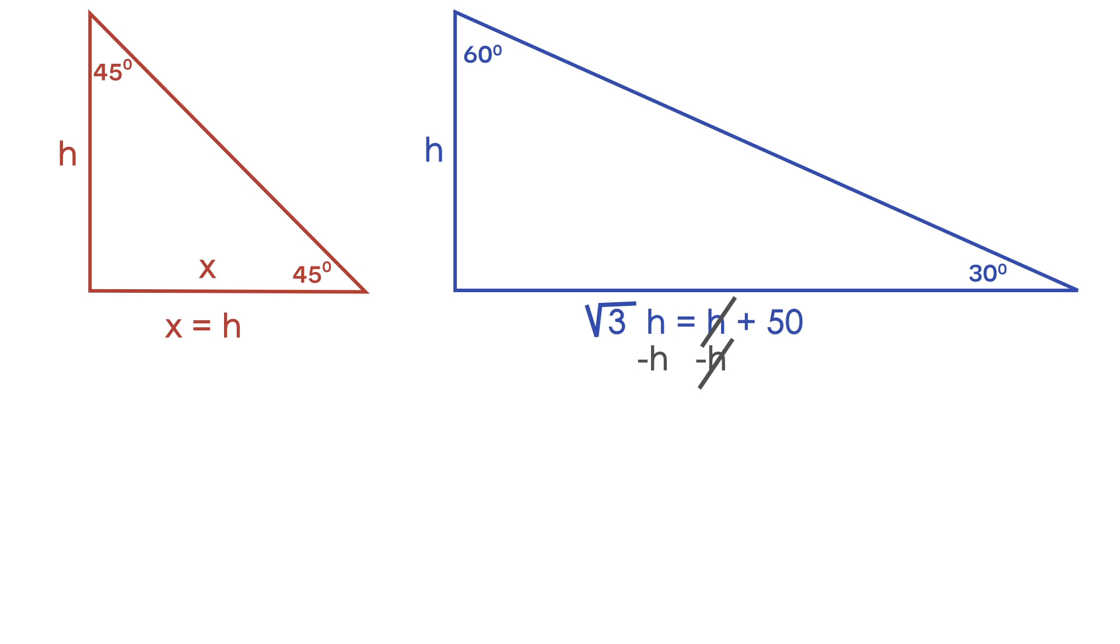And on the left side, we have the square root of 3h minus h. And on the right side, we still have our 50.